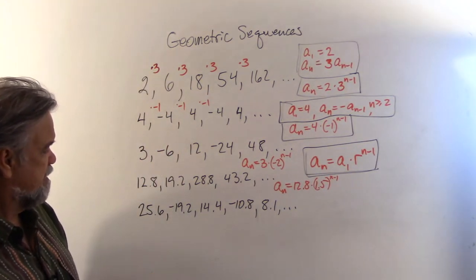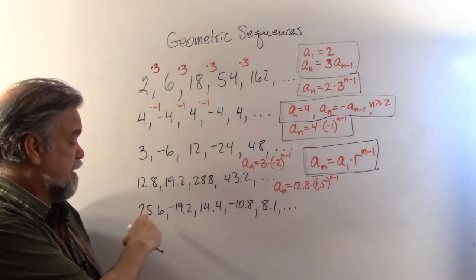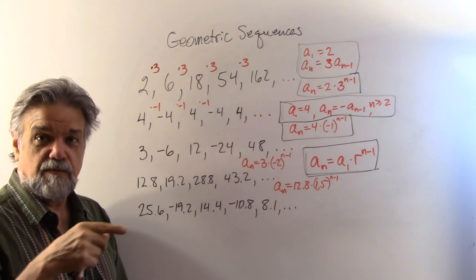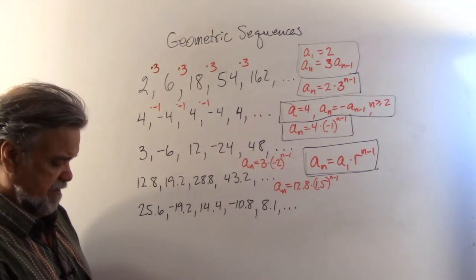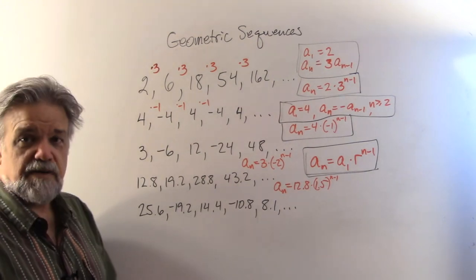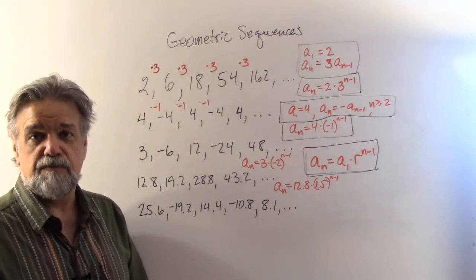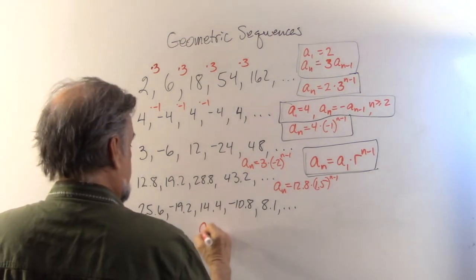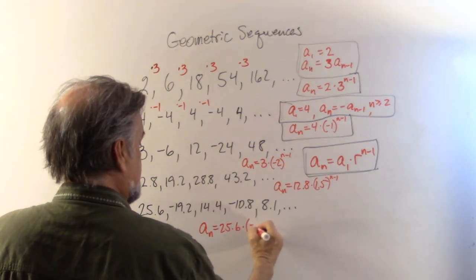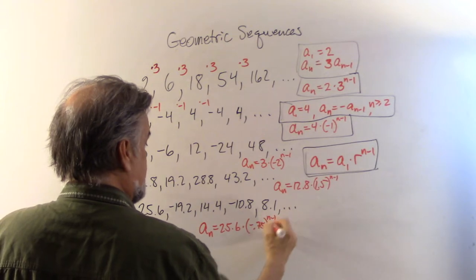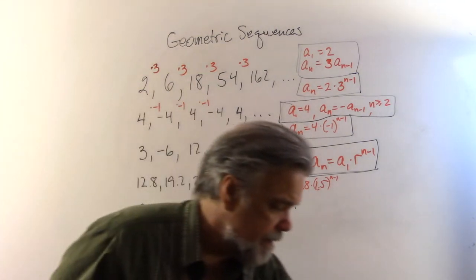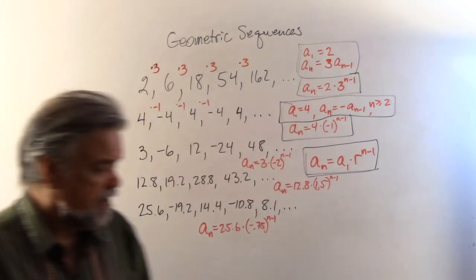The last example alternates positive and negative, so r is a negative number. Calculating: 19.2 divided by 25.6 gives negative 0.75, or negative three-fourths. So this sequence is a sub n equals 25.6 times (-0.75) to the n minus 1 power. Same formula every time.